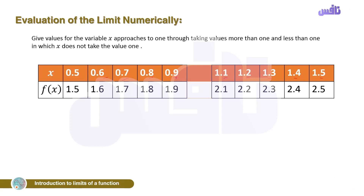We cannot substitute x = 1 directly because that gives 0/0. So we take values before and after 1. The values before 1: 1.5, 1.6, 1.7, 1.8, 1.9 for f(x) — these come from x approaching from the left: 0.5, 0.6, 0.7, 0.8, 0.9. From the right side: x = 2.1, 2.2, 2.3, 2.4, 2.5 — these are greater than 1.